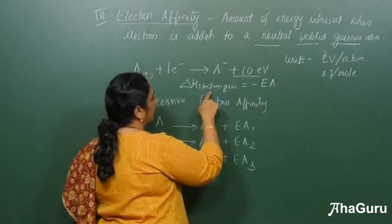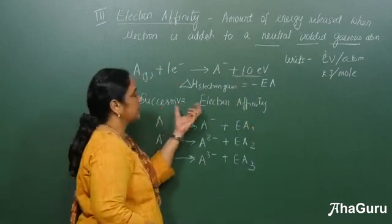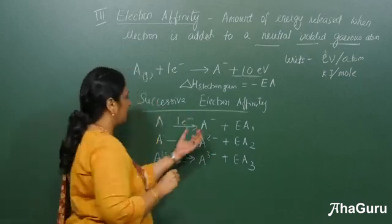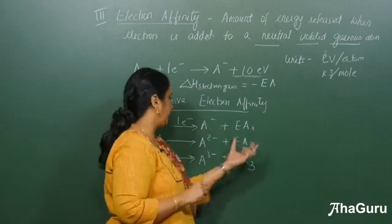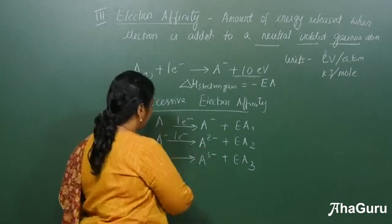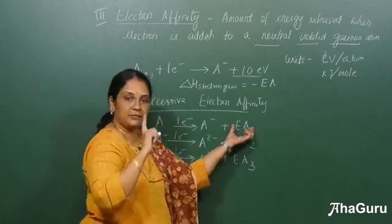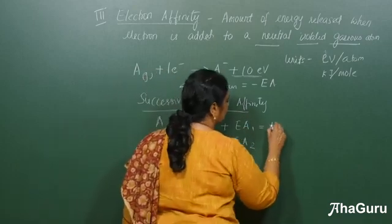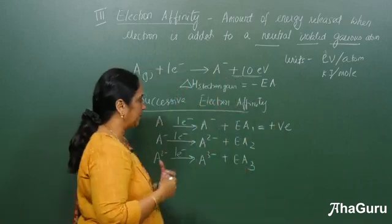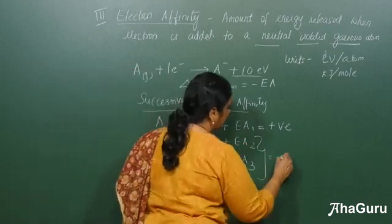For this reaction, delta H will be minus 10 electron volt. Now for successive electron affinities: adding one electron gives A minus with energy Ea1; adding another gives A2 minus; adding one more gives A3 minus. Always remember that Ea1 is positive because energy is given for the atom to take up the electron, but Ea2 and Ea3 will both be negative. This is a very important point.